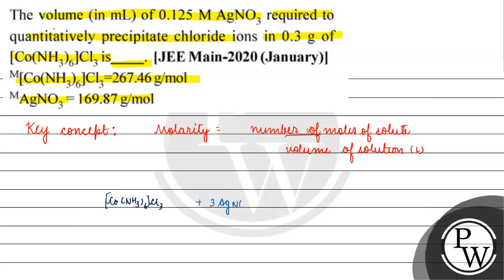Jo 3 silver ions ke saath hi reaction karke kya denge - 3 AgCl denge. Now agar baat karein, isko hum ye samajh sakte hain ki 1 mol of this complex basically reacts with 3 moles of AgNO3.